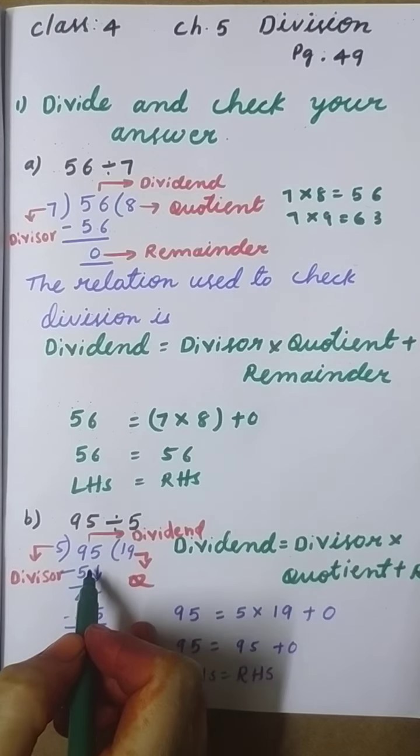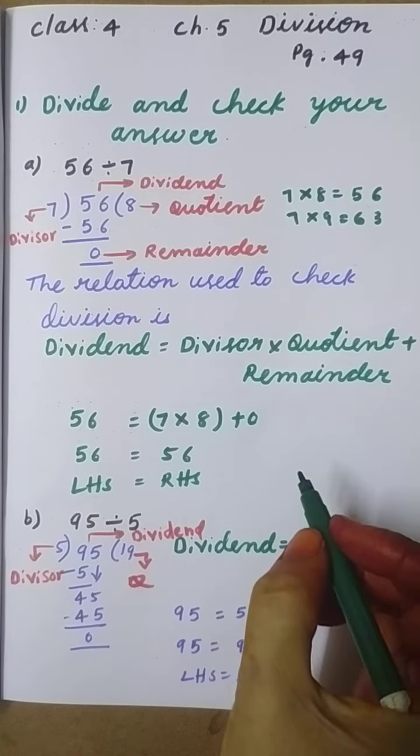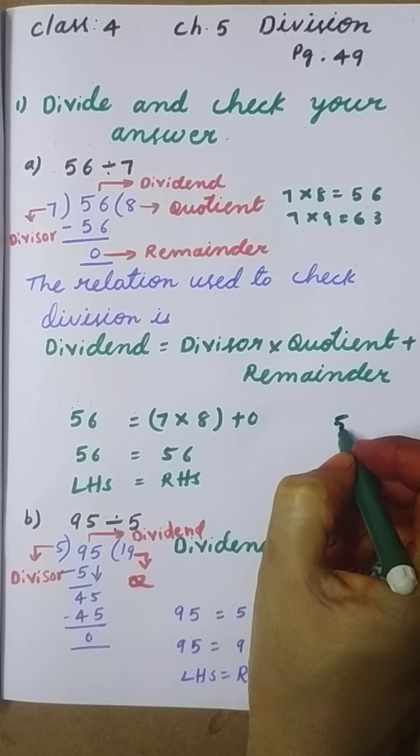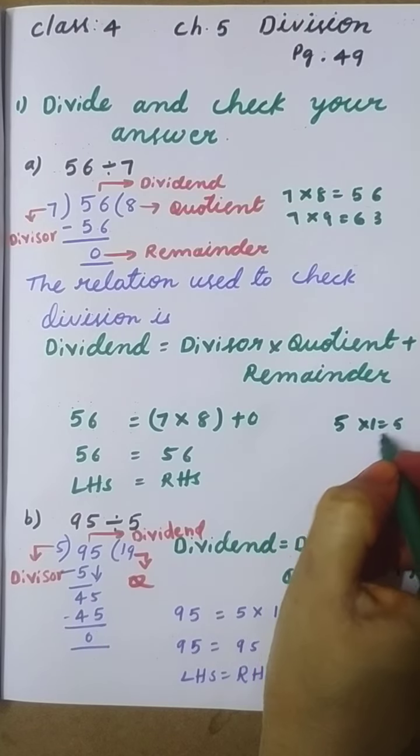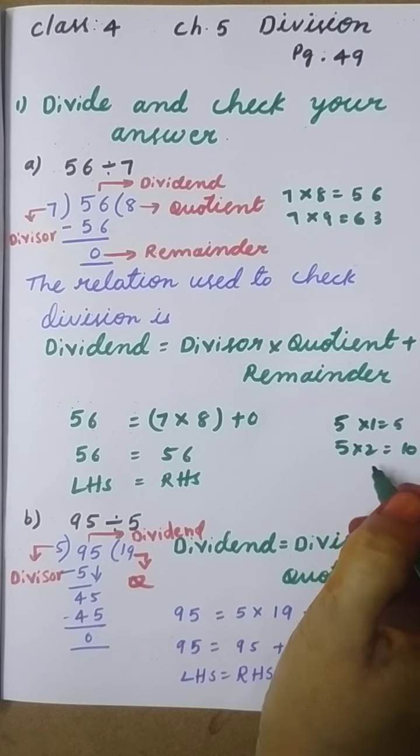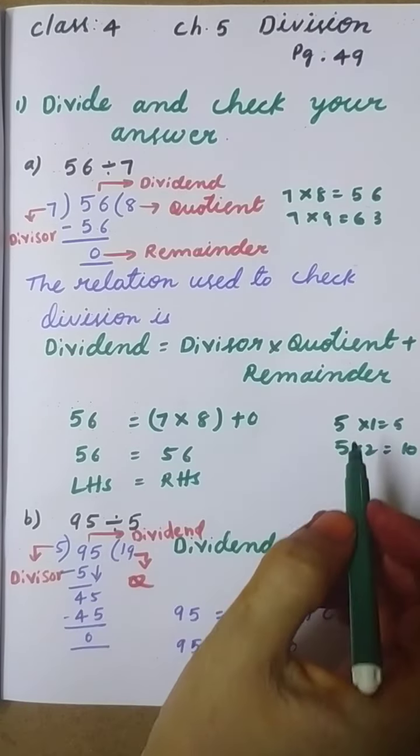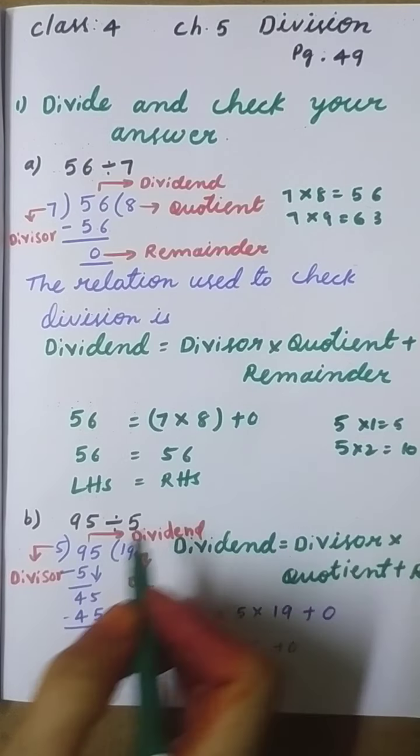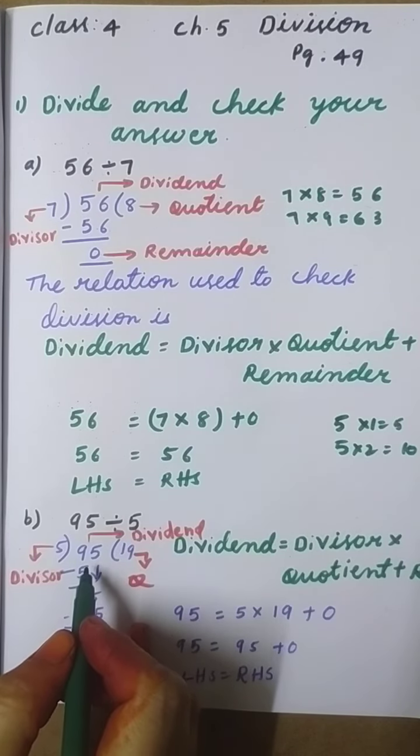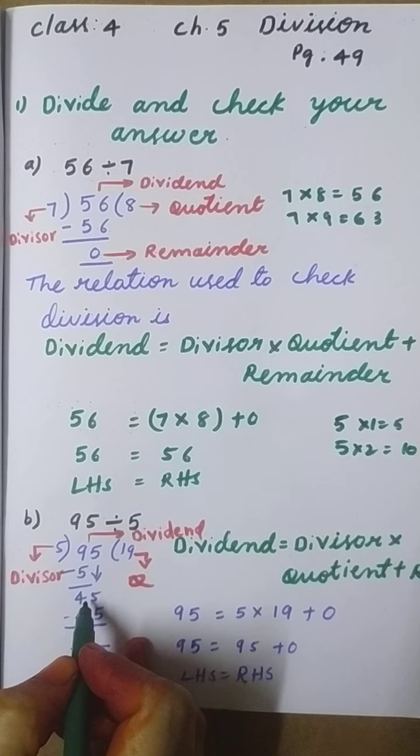5 times 1 is 5. If I take 5 times 2, it would be 10, which is a bigger number than 9, so we take 5 times 1 equals 5. 9 minus 5, we get 4 here. Next, we copy this 5.